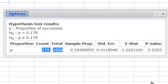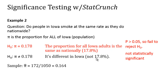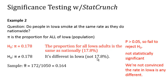Now that I've got the p-value, of course I know what to do. Remember that our focus is on the null hypothesis, and since the p-value is greater than 0.05, we know we're going to fail to reject that null hypothesis. In other words, the difference was not statistically significant, and we can say in plain language that we're not convinced the rate in Iowa is any different.